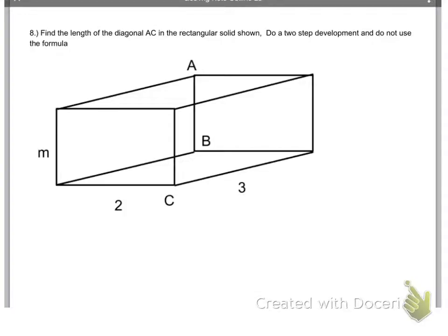This is like the type of a question that you're going to get in your homework tonight. It says, find the length of the diagonal A to C in a rectangular solid shown. Do the two-step development and do not use the formula. We created a formula but again, I want the two-step. I want you to actually see the thought process that's going on. So, again, I'll show you guys where A to C is. That's A to C right there. But A to C, to find A to C, you would also need to have B to C because we're going to use that two-step process and that forms a right triangle in there. But also, that is a right triangle here on the bottom.